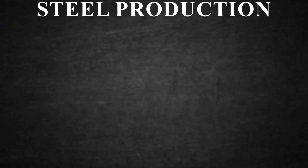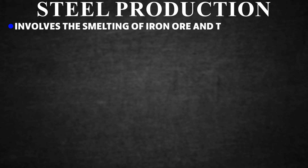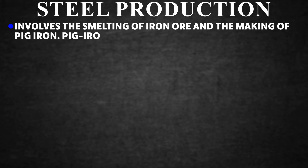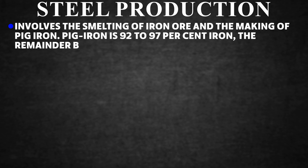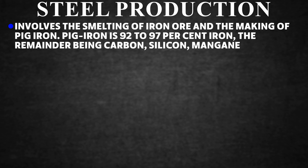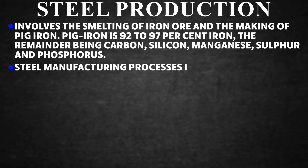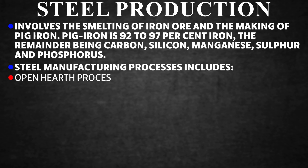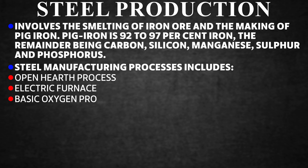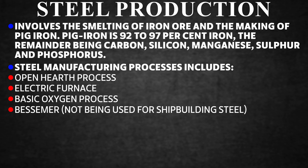Steel production involves the smelting of iron ore and the making of pig iron. Pig iron is 92 to 97% iron, the remainder being carbon, silicon, manganese, sulfur, and phosphorus. Steel manufacturing processes include: the open hearth process, electric furnace, and basic oxygen process. The Bessemer process is no longer used for shipbuilding steel.